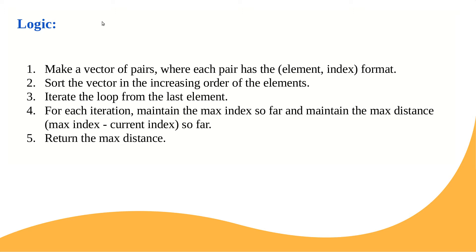Now let's look at the approach. We need to handle two properties: first, the right element should be greater than or equal to the left element, and second, we need to maximize this distance. The ideal case is the rightmost and leftmost elements. The logic is: make a vector of pairs where each pair has the format (element, index), because we need to track both the distance and the relative element values. The second step is to sort the vector in increasing order of elements.